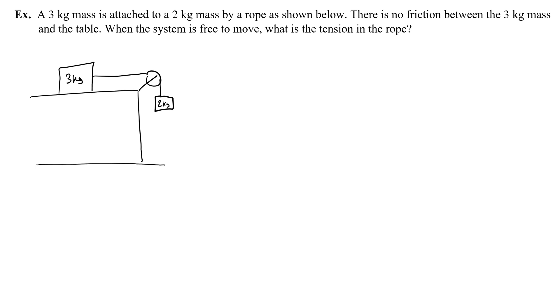A 3 kg mass is attached to a 2 kg mass by a rope as shown below. There is no friction between the 3 kg mass and the table. When the system is free to move, what is the tension in the rope? The first thing for us to notice is this: there is no friction between the 3 kg mass and the table. That means here there is no friction.